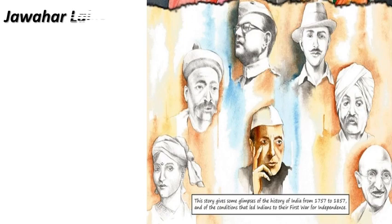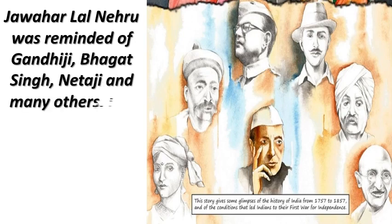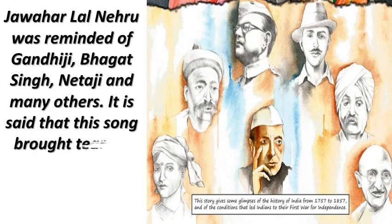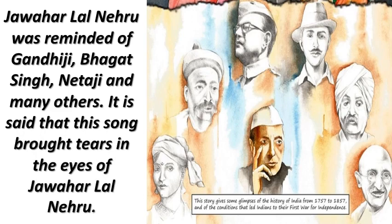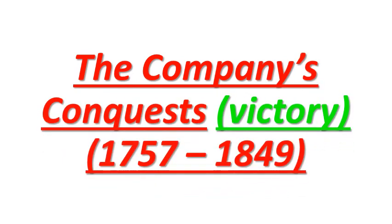This story gives some glimpses of the history of India from 1757 to 1857 and the conditions that led Indians to their first war for independence. It is said that this song brought tears to the eyes of Jawaharlal Nehru. Now, section two: The Company's Conquests. Conquests means victory. From 1757 to 1849, the British East India Company with its superior weapons was extending its power in 18th century India.